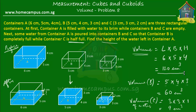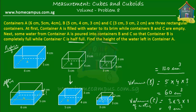Out of a total of 120 cubic centimeters, we poured 60 cubic centimeters into container B and 9 cubic centimeters into container C. So how much water was left in container A? Simply: 120 minus 60 minus 9. 120 minus 60 is 60, and 60 minus 9 is 51. So 51 cubic centimeters of water was left in container A.